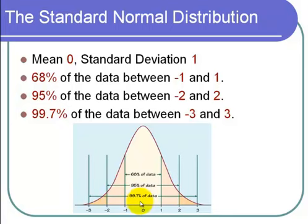I'm using the letter z, and it's not a coincidence — that has to do with the z-score. The z-score is x minus mu divided by sigma. Well, if mu is 0, then x minus mu is just x, and sigma is 1, so x over 1 is just x. So z equals x. Let's continue on and solve some problems.